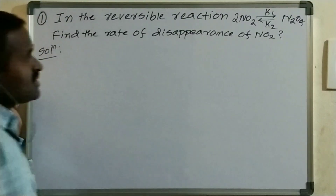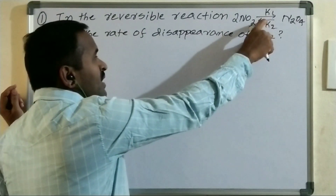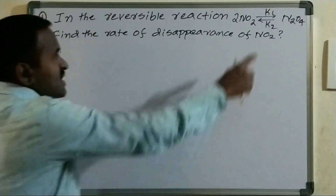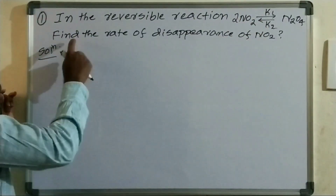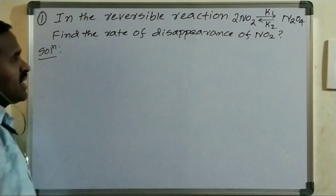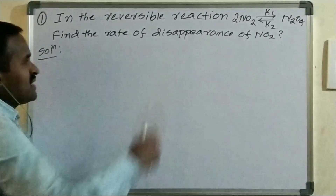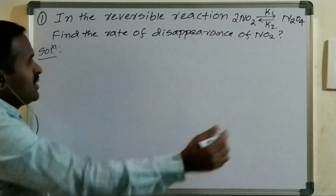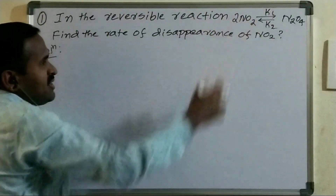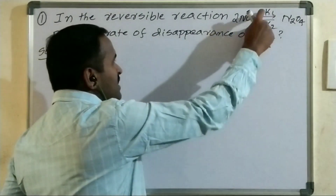In the reversible reaction, 2 moles of NO2 gives rise to N2O4. The rate constant for the forward reaction is K1, the rate constant for the backward reaction is K2, and they are asking to find the rate of disappearance of NO2. So we can write the reversible reaction rate. NO2 is the reactant that gives rise to the product N2O4 in the forward reaction, with rate constant K1, and backward rate constant K2.